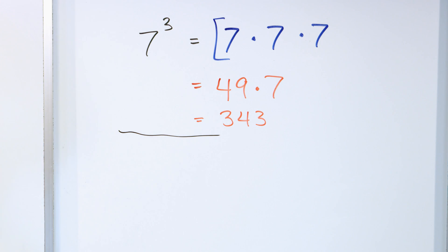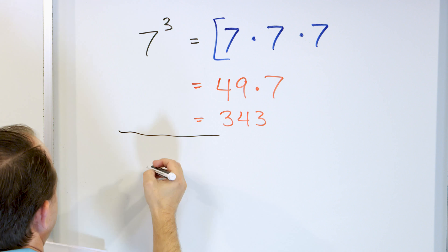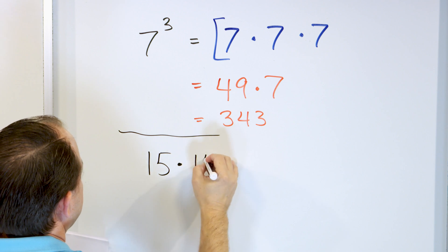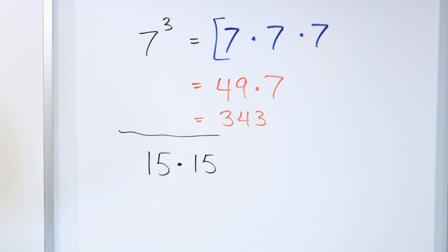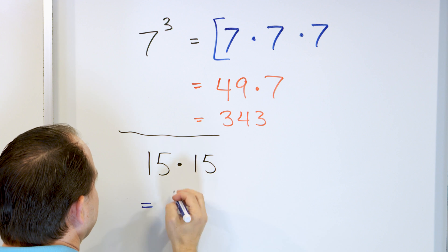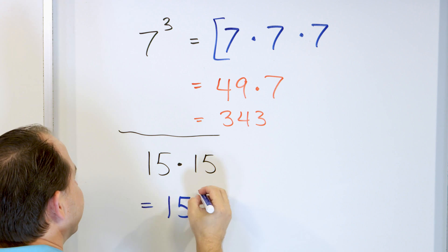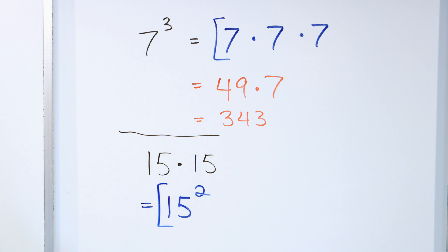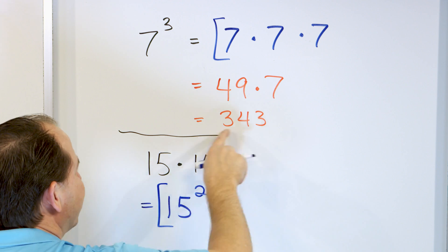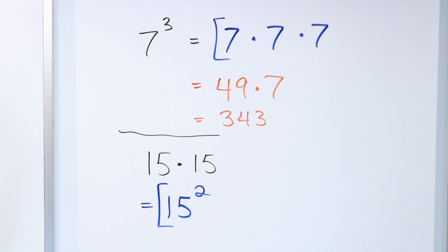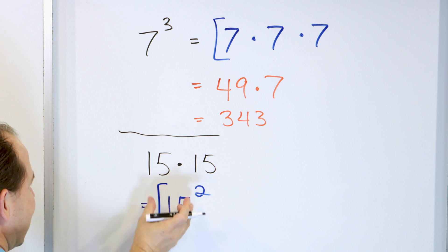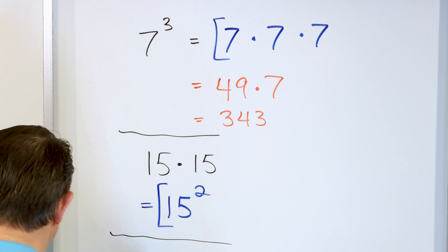Let's take a look at 15 times 15. I give you this product and I say write it as an exponent. The 15s are what's being multiplied and there are two of them, so it has to be 15 squared. That's the final answer. We're not going to calculate the actual number for all of these — the skill we're going after is writing it as an exponent.